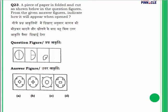Question number 23: a piece of paper is folded and cut. We have to identify the correct unfolded image. After the first fold, second fold, and a cut is made. When unfolded, cuts appear symmetrically on both sides in the middle. This figure is present only in option A. Option A is the correct answer.